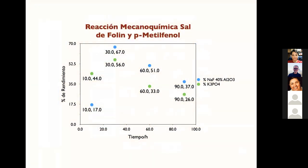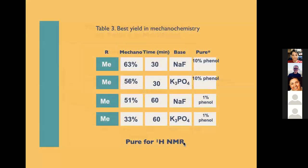La pandemia en 2020 retrasó el proyecto. Estamos trabajando en optimizar las condiciones mecanoquímicas variando número de balines, frecuencia y base. La mejor base para el metilfenol es una mezcla de fluoruro de sodio al 40% con aluminio. Aparentemente, cada fenol requiere su propio sistema de optimización.